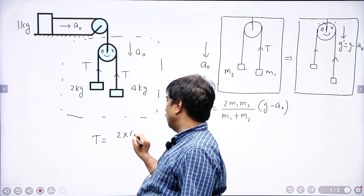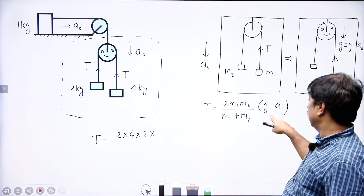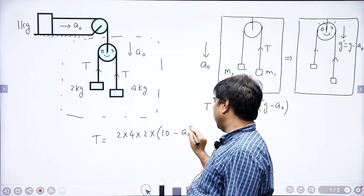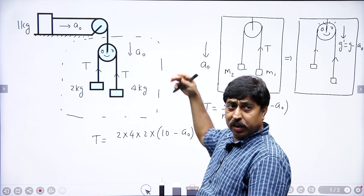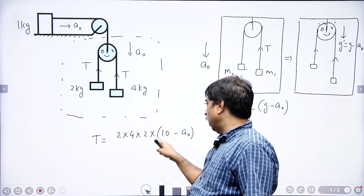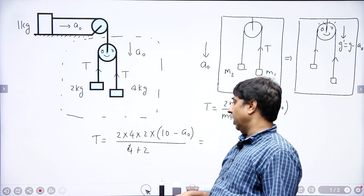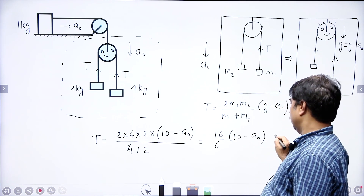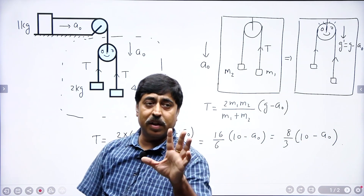Tension ko likhenge: 2 × M1 × M2 × g_effective / (M1 + M2). Here M1 is 4 kg and M2 is 2 kg. The effective acceleration of free fall inside the pulley's reference frame is G minus A0, which I am writing as 10 minus A0 (taking G = 10). So tension T = 2 × 4 × 2 × (10 - A0) / (4 + 2) = 16/6 × (10 - A0) = (8/3)(10 - A0). This is the tension in this string.